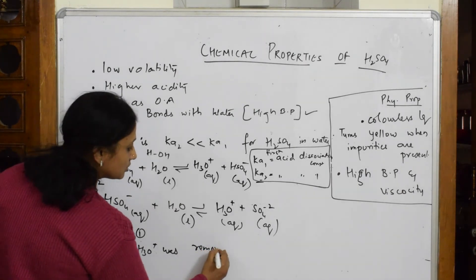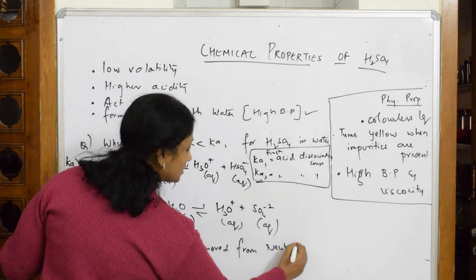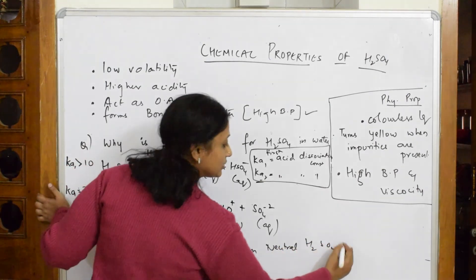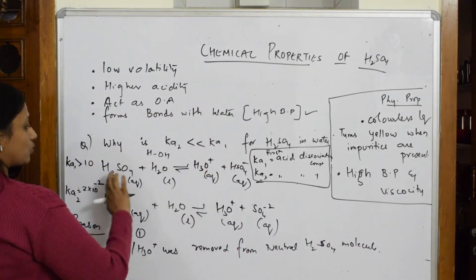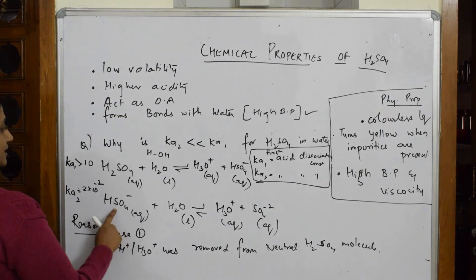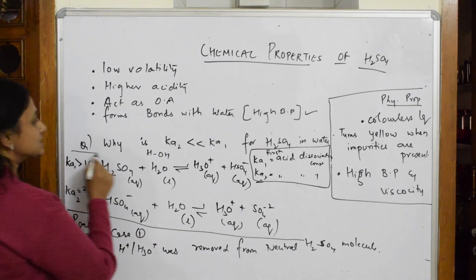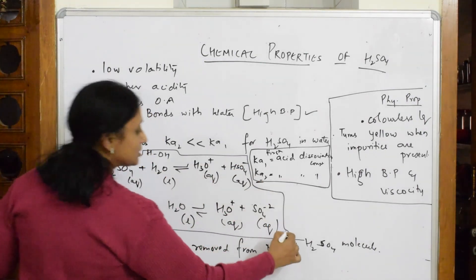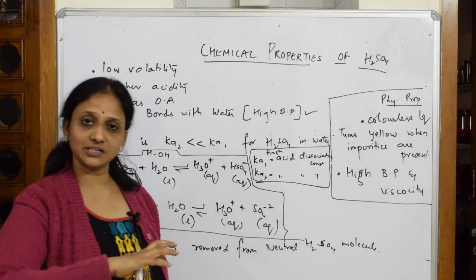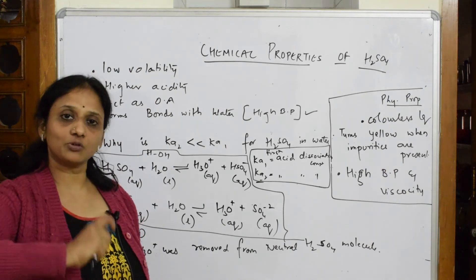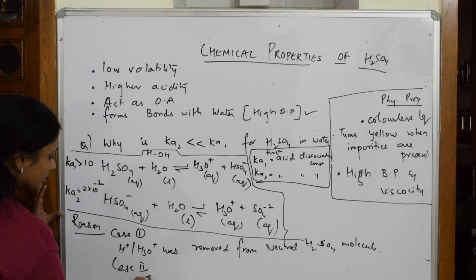In the second case, I'm supposed to take out protons from a negative ion. It's very difficult—easy to remove from a neutral molecule, but removing a proton from a negative ion becomes difficult. In case two, removing H+ or H3O+ from a negative ion, that is HSO4-, is difficult.